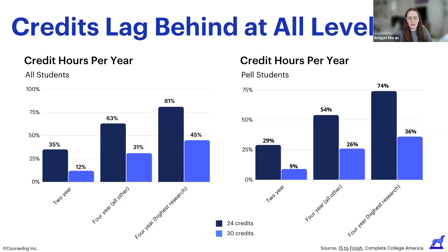On the left, you'll see the average number of credit hours taken by all students in their first year — it paints a somewhat alarming picture. On the right, it's even more concerning if you look at credit hours taken by Pell Grant students. At four-year institutions excluding research universities, 31% of all students take 30 credits in their first year, while just 26% of Pell Grant students at those same institutions do. The disparity is even greater at institutions with the highest research designation: 45% of all students take 30 credits in their first year, compared to just 36% of their Pell Grant peers.